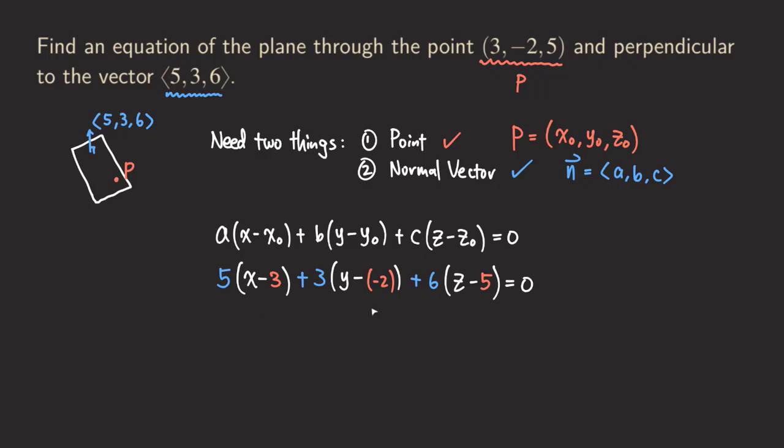And then now we just need to simplify this equation. Basically, we already have the answer, which is this one. But if you want to write it in simplified form, then we can actually distribute. So we can get 5x - 15.